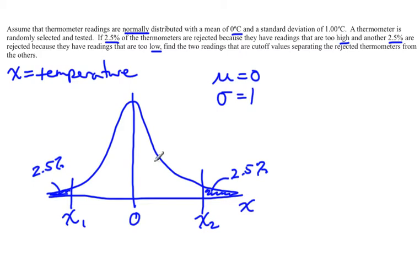If you use the TI-83 or TI-84 calculator, then x equals the inverse norm of the area below. For X1, the area below is 2.5%, so you put in 0.025, then a mean of 0 and a standard deviation of 1.